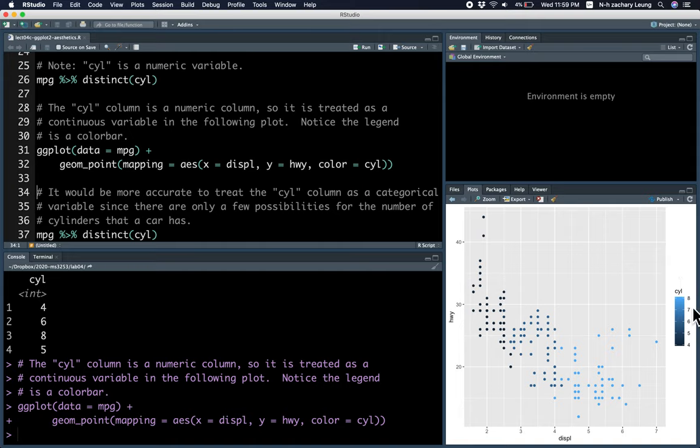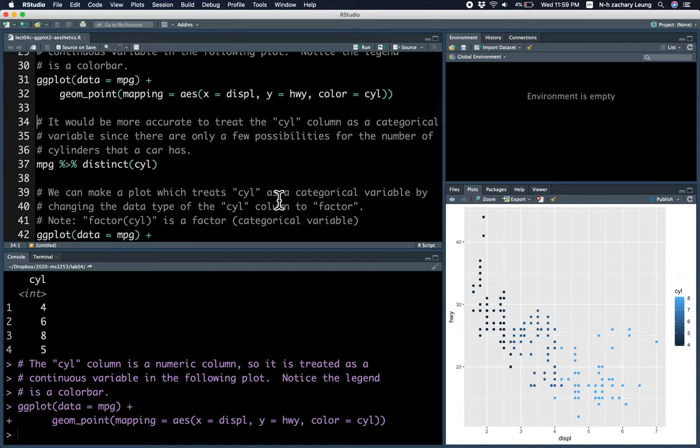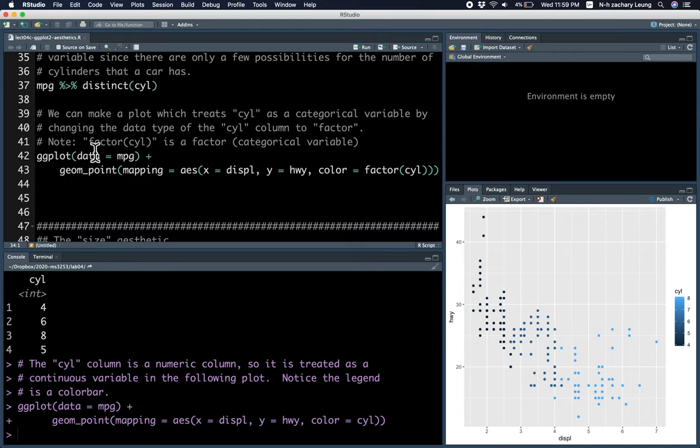But it may make more sense to treat this column as a categorical variable given that there are only a few numbers of cylinders. So you can do that by changing it to factor in the color option.